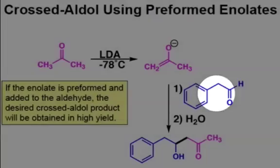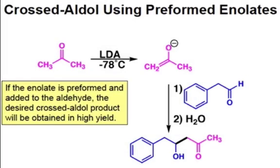By knowing that LDA quantitatively forms the enolate product, we can form it first and then add it to the second carbonyl compound, knowing that the second carbonyl component will act as an electrophile upon addition of the nucleophilic enolate. This reaction sequence typically gives a good yield of a single product.